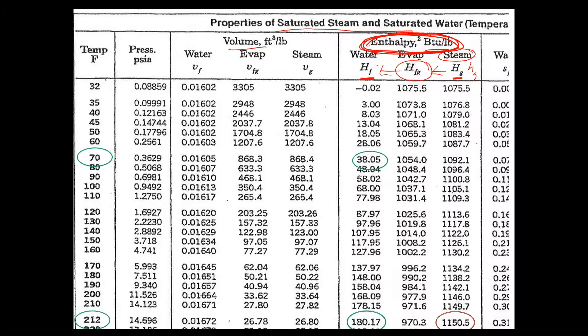At 32°F — basically freezing — the enthalpy of the water is essentially zero. It's pretty linear because it's 1 BTU per pound per degree Fahrenheit, so every degree you go up, you go up 1 BTU per pound. For example, 70°F water has 38 BTUs per pound, which is exactly 38 points above 32.